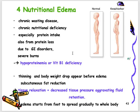Nutritional edema — which you'll study in pediatrics as kwashiorkor — involves nutritional deficiencies, chronic wasting disease, low protein intake, and GIT disorders. There is thinning of the body and subcutaneous fat reduction before edema appears.